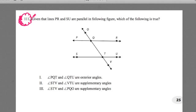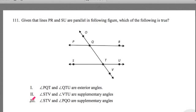Alright, so let's take a look. Number 111, given that lines PR and SU are parallel in the following figure, which of the following is true? Now we have this figure here. We're told that these two lines, this one and this one are parallel, and we're asked this question, which one of these statements is true? It may be more than one.